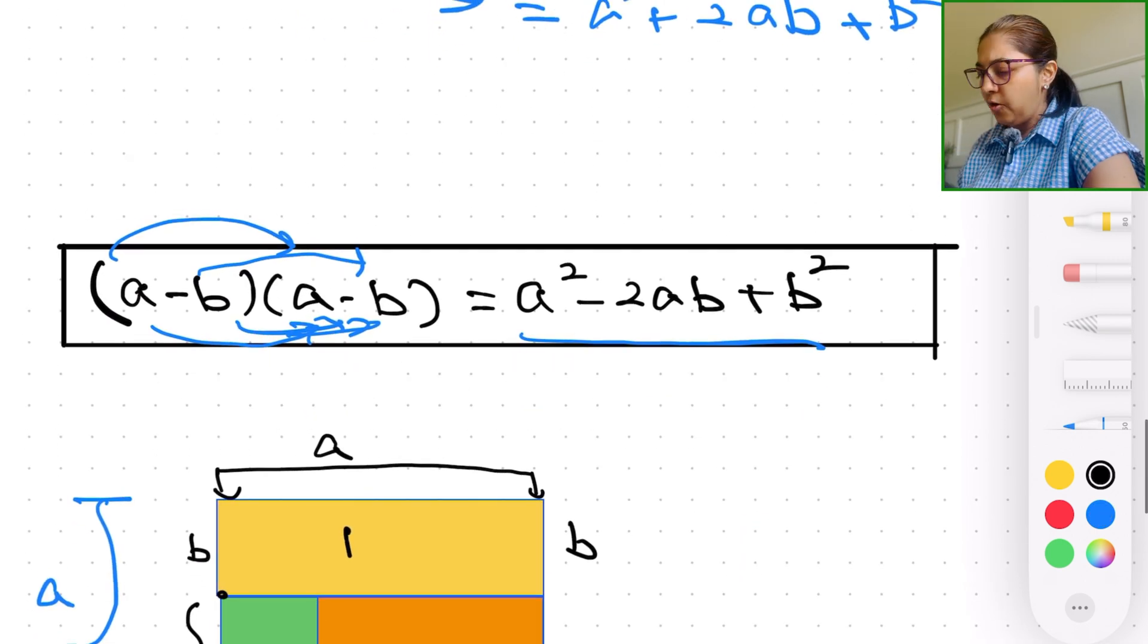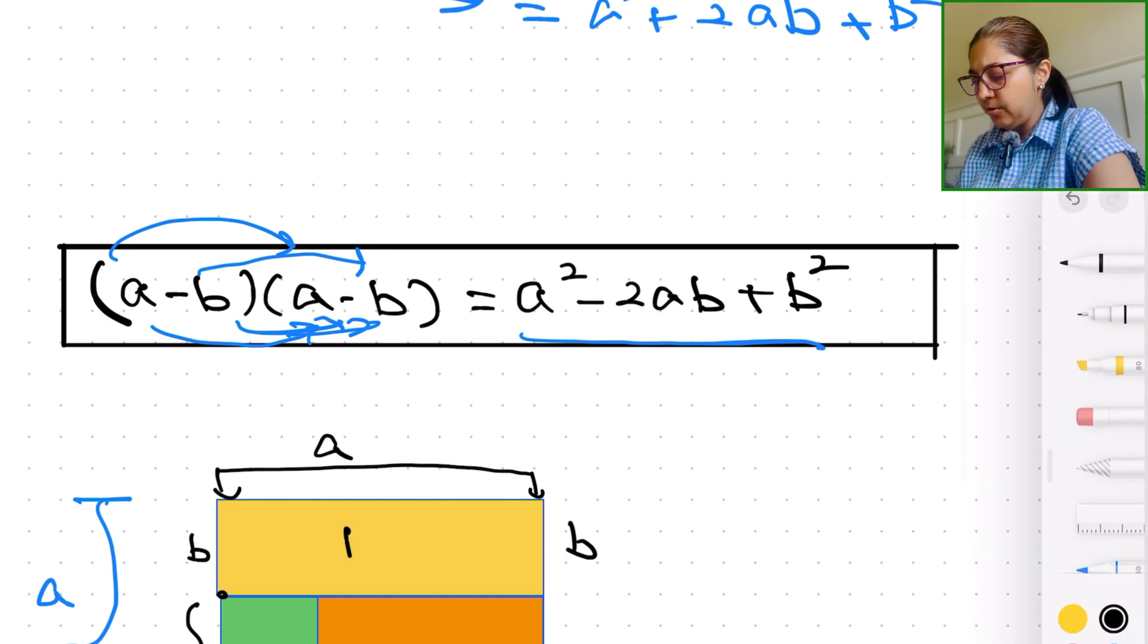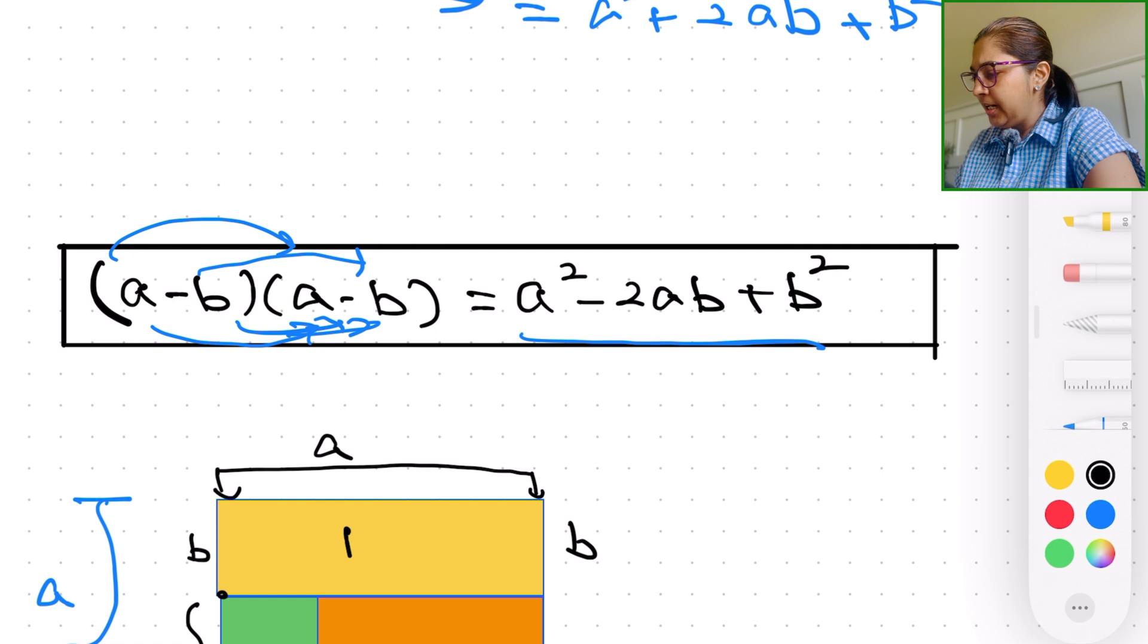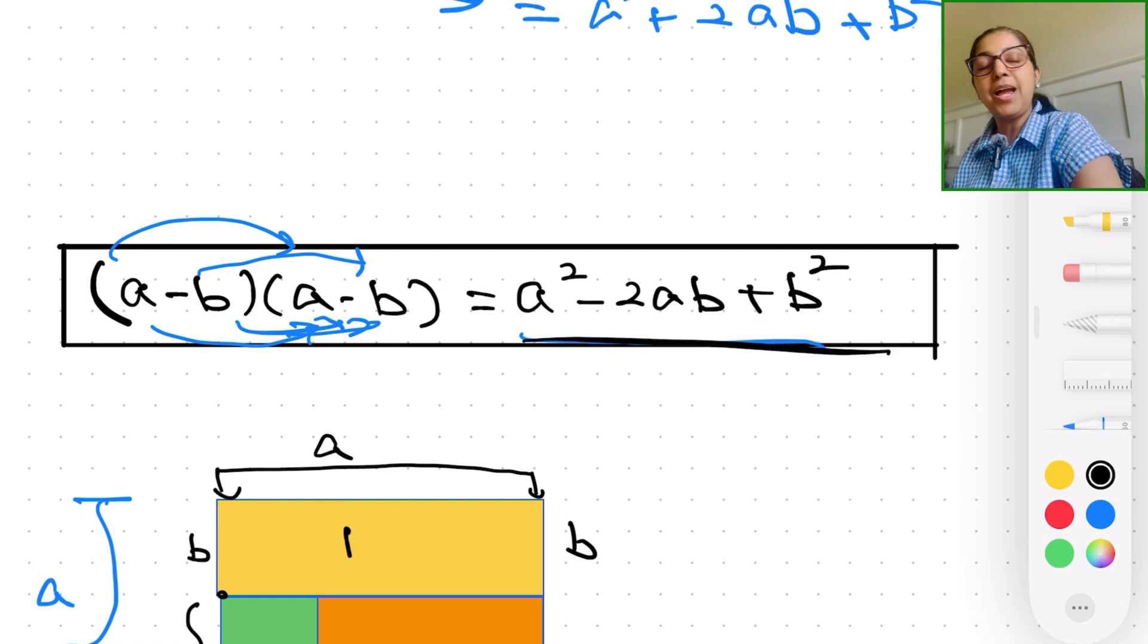We have another formula of (a-b) times (a-b). And if you foil it, you can see on the screen, I've written it already. This is what we will get: a squared minus 2ab plus b squared. Now let's use our jigsaw puzzle.